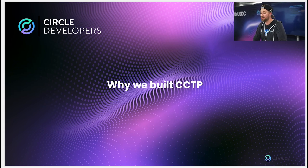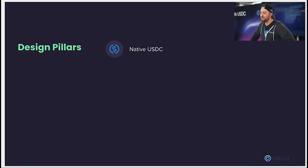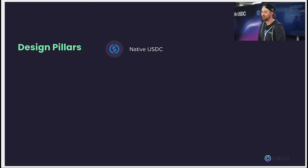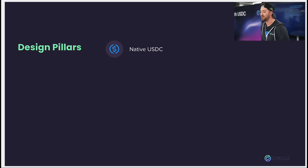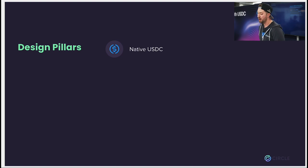We had a few key design pillars around which we wanted to build CCTP. First, a focus on native USDC. Our primary goal was to allow individuals to seamlessly move native USDC between blockchains. We really want to move away from any type of wrapped asset because they create huge honeypots — as we've seen over the past year or so, the escrow contracts can be drained and cause a huge loss of funds.